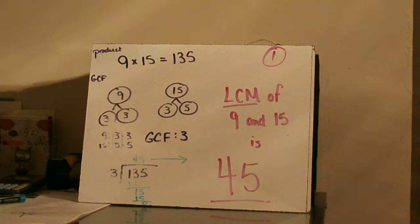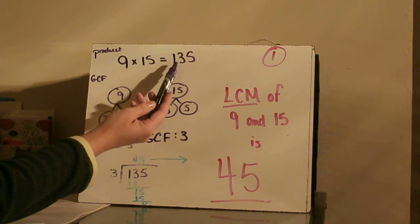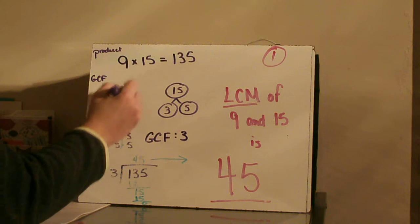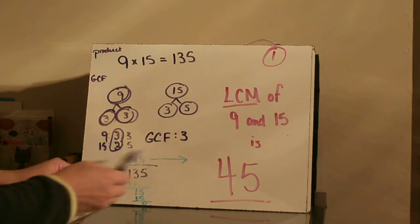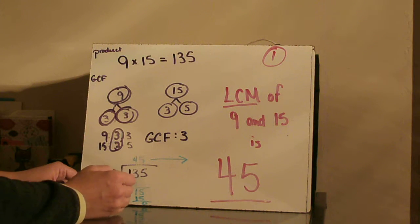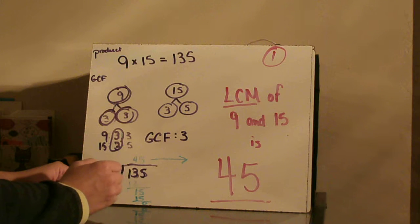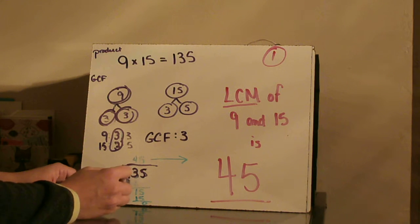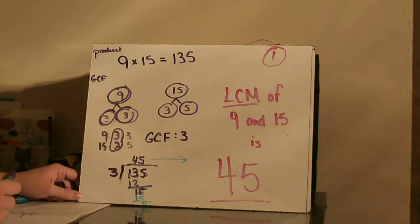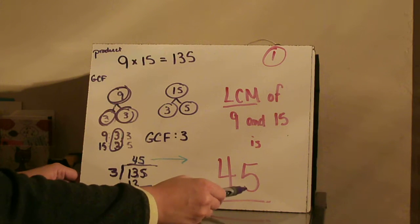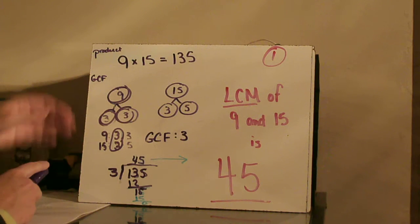Let's go over the solutions. For question number one, what is the LCM of 9 and 15? The first thing I did was find my product: 9 times 15 is 135. Then I determined my GCF using my factor tree, and the threes matched up, so my GCF was 3. Then I took my product of 135 and divided it by 3. 3 goes into 13 four times (that's 12), with 15 remaining, and 3 goes into 15 five times. So the answer is 45 — the LCM of 9 and 15 is 45.